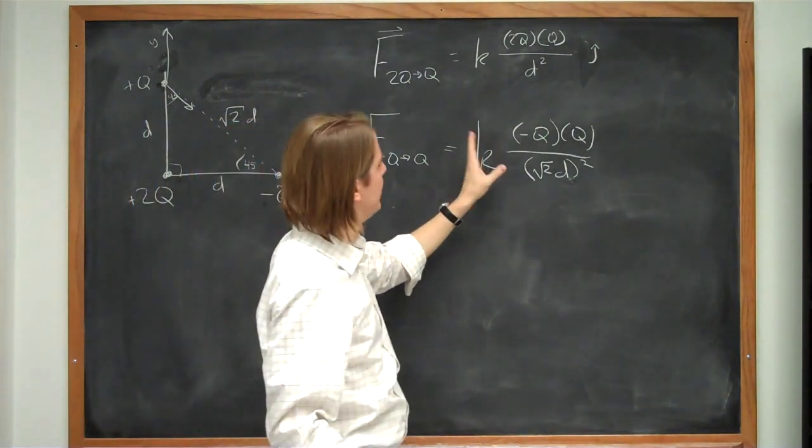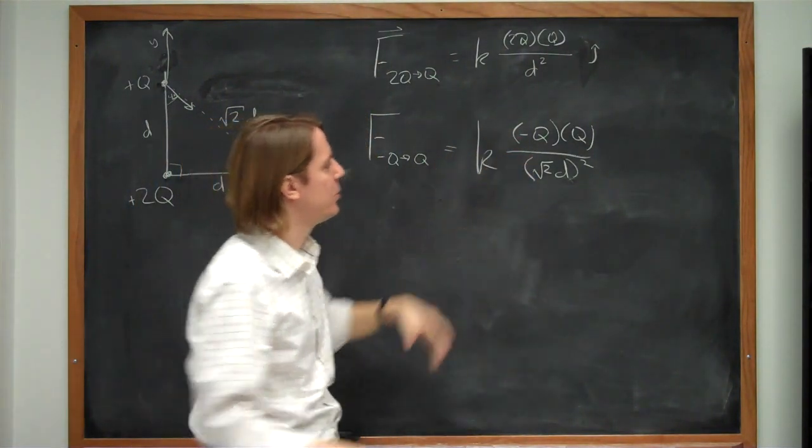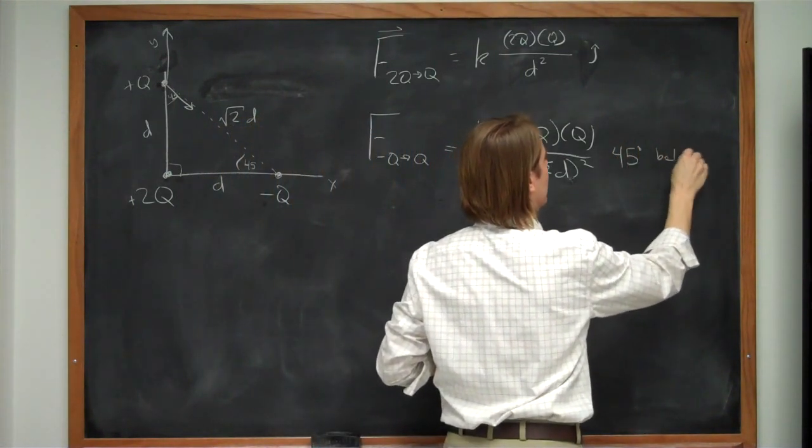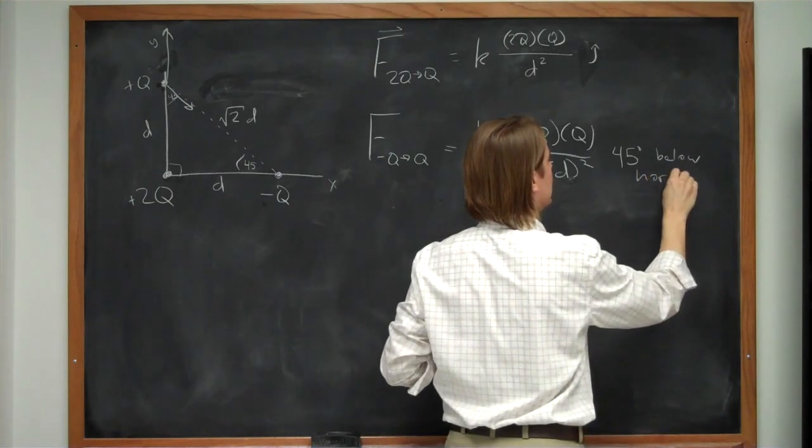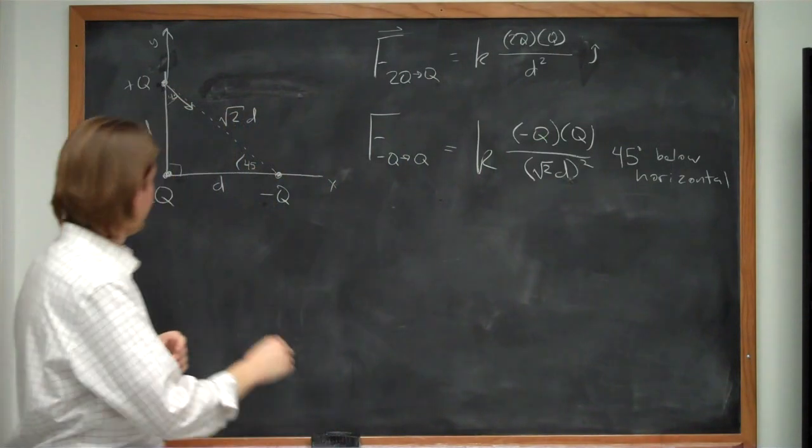So we know that this force is k times q squared over square root of 2d quantity squared. And so it's 45 degrees below the horizontal.